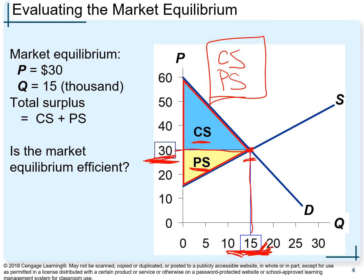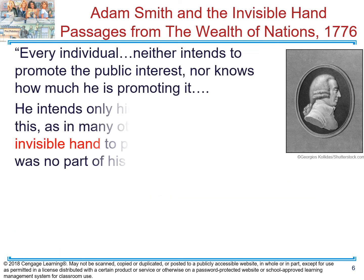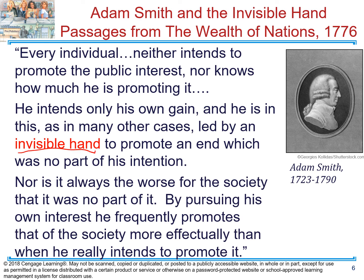This is not when the government dictates the price, but when the invisible hand is working in the market. Adam Smith, who wrote 'The Wealth of Nations,' introduced the concept of the invisible hand — where the interaction of buyers and sellers determines the price in the market. This is where total surplus is maximized. You do need to know this for the test.